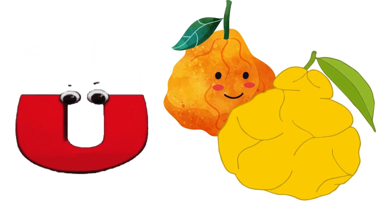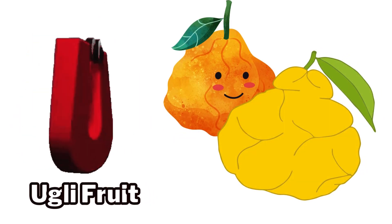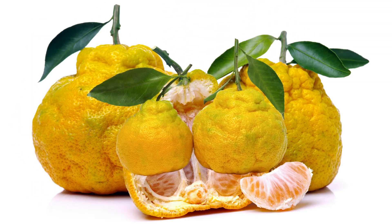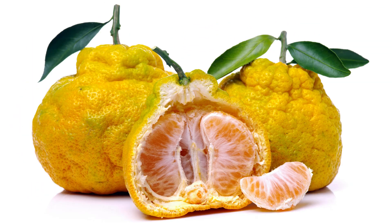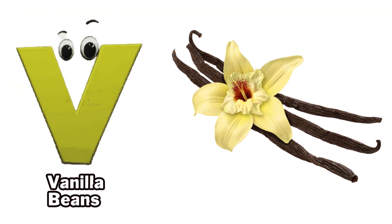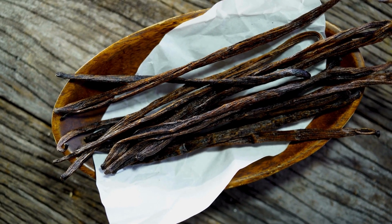U is for ugly fruit, u-u-ugly fruit. V is for vanilla bean, v-v-v-vanilla bean.